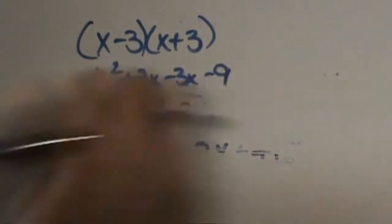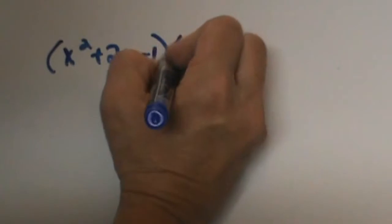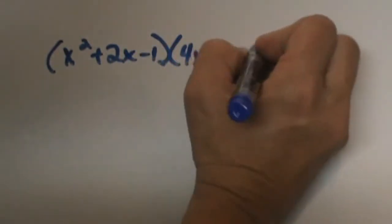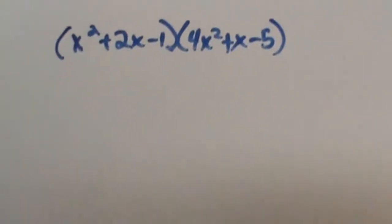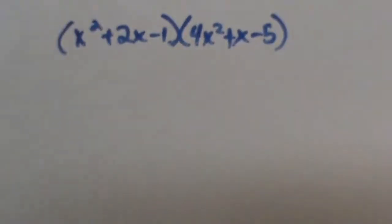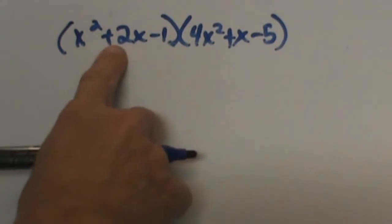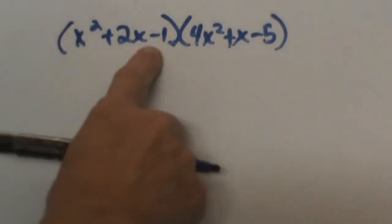Now number 7, we're going to multiply a trinomial times a trinomial. So let's look at that. We have a trinomial times 4x squared plus x minus 5. I'll just warn you, this one gets lengthy.